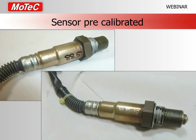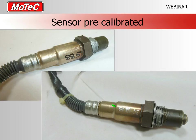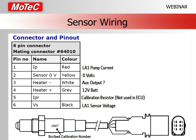If the sensor is purchased from MoTeC, we perform a pre-calibration process on each lambda sensor. We write a calibration number on the sensor itself in black pen and then scribe it in. For example, you can see the number 885 on this sensor. If you purchase from us, that calibration is done for you and you simply enter that number directly into the ECU — as we'll see shortly.